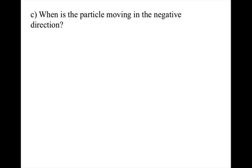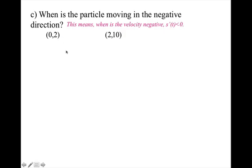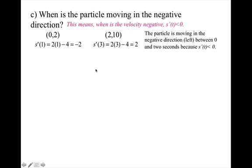When is the particle moving in the negative direction? This means when is the velocity negative — when is the derivative less than 0. So we set up intervals: from 0 to 2 and from 2 to 10, since we know the particle is not moving at t equals 2. I pick a value within each interval — I chose 1 and got a negative value for the interval 0 to 2 seconds, then picked 3 and got a positive value for 2 to 10. So the particle is moving in the negative direction, in this case left, between 0 and 2 seconds because s prime is less than 0.